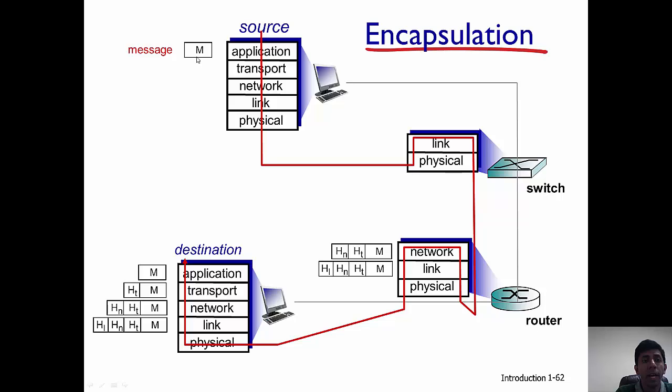So once the source creates an application message, what happens is it passes it on to the transport layer. In the transport layer, there is additional header information that's added, which is H with the subscript T here. And a transport layer message is actually called a segment.